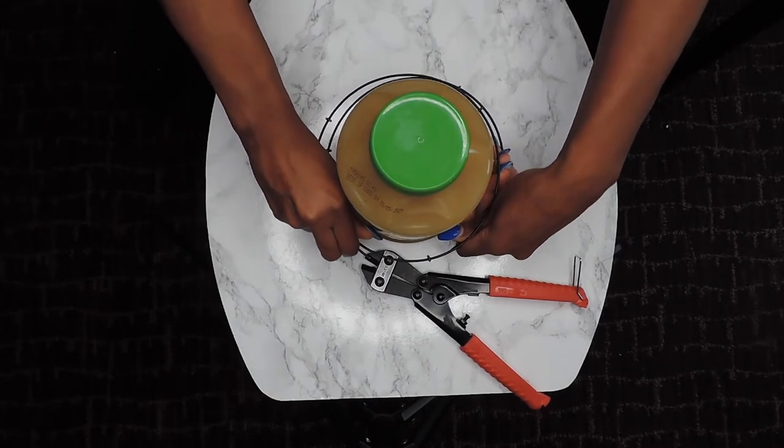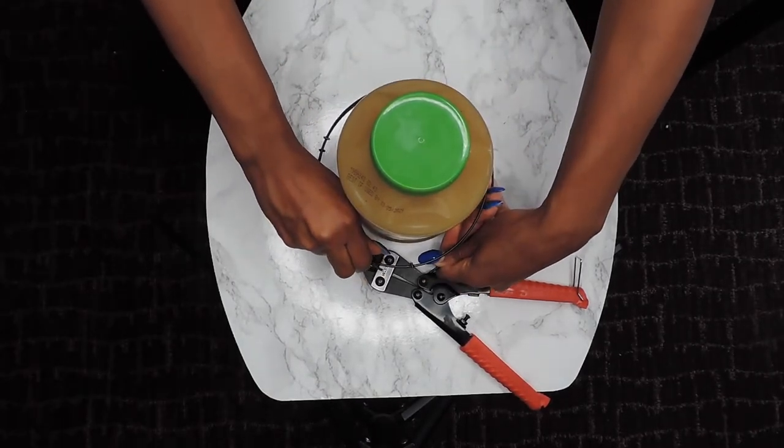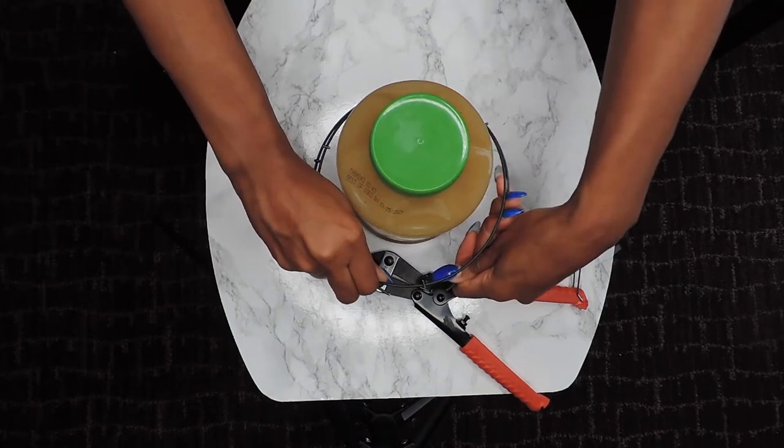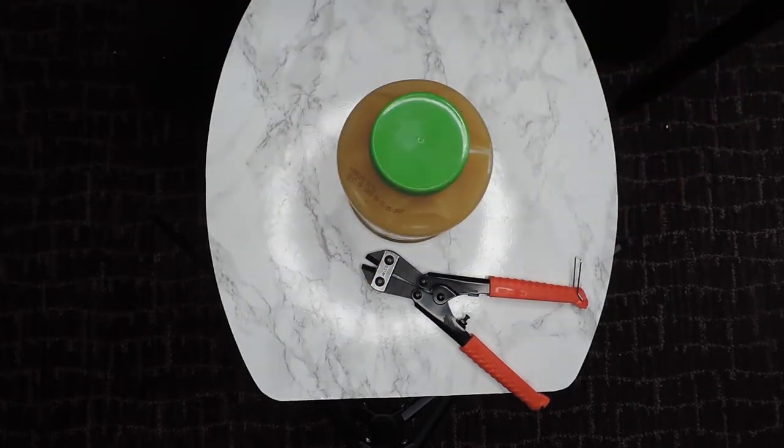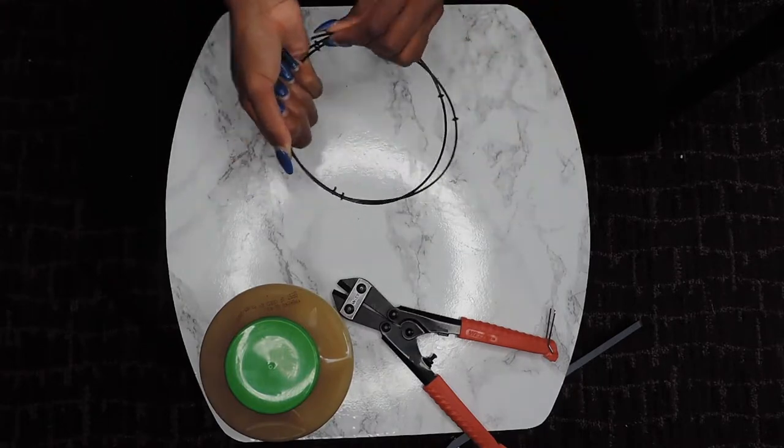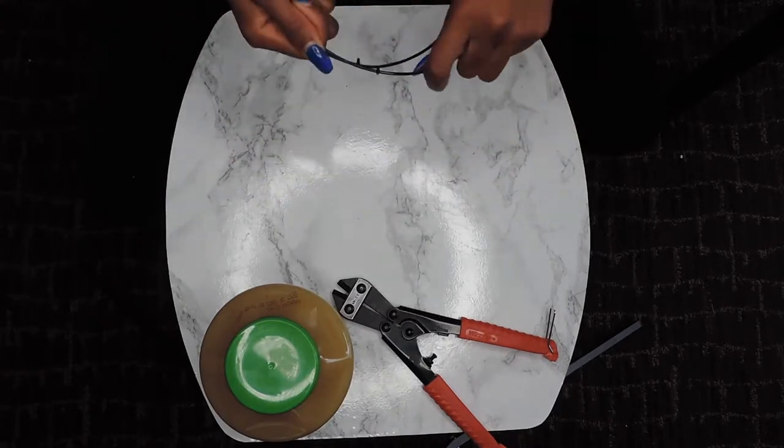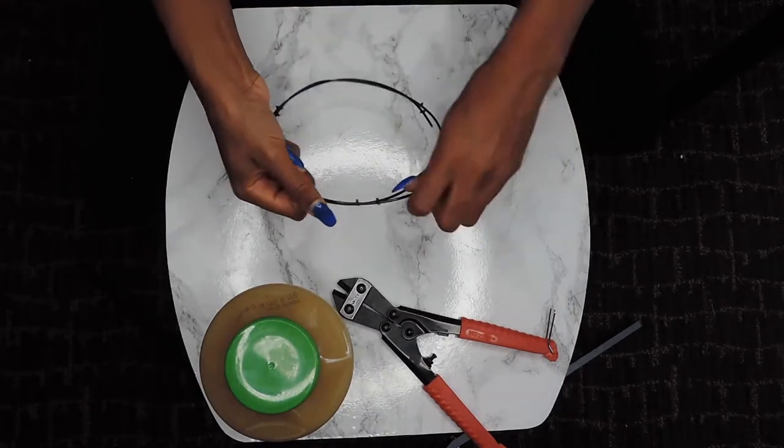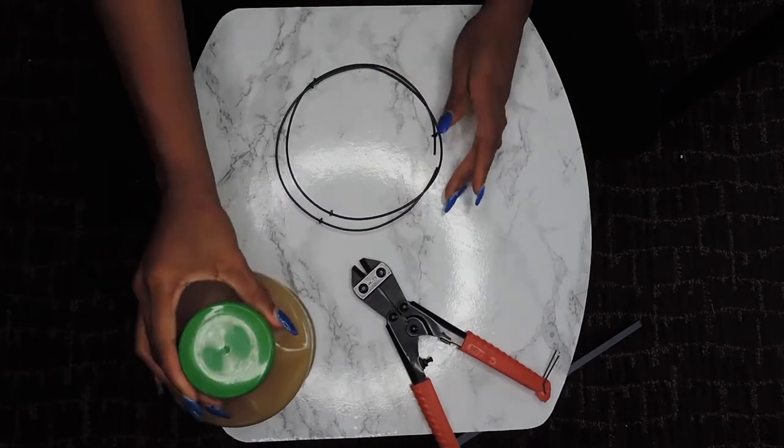But if you don't have like a perfect size, then you know you just find the size and then cut it with the wire cutter. So that's another reason why I didn't need the wire cutters, because the wire was perfectly sized.